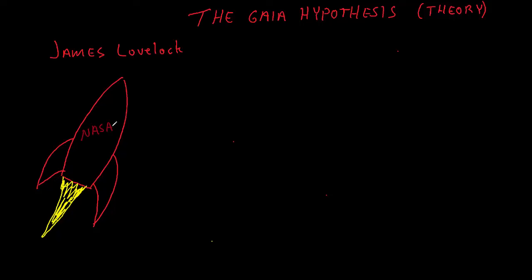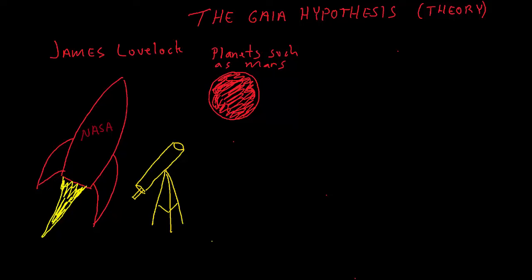James Lovelock was working for NASA and coming up with a method to see if there was life on other planets by looking at them through a telescope instead of traveling there, much more cost effective.